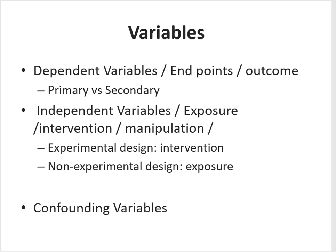A third type of variable that we will not discuss at this point is a confounding variable. It is a variable that is neither dependent nor independent, but it might confound the relationship between the two. We will address that in a later lecture.